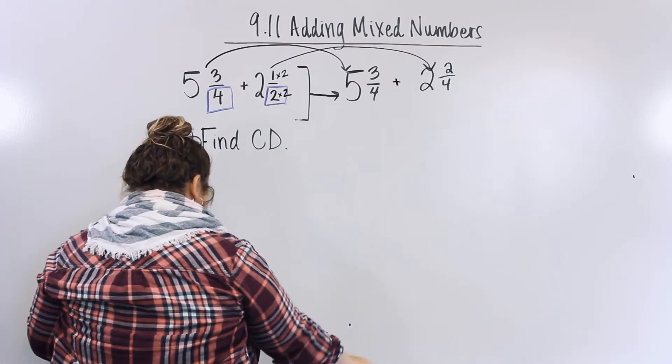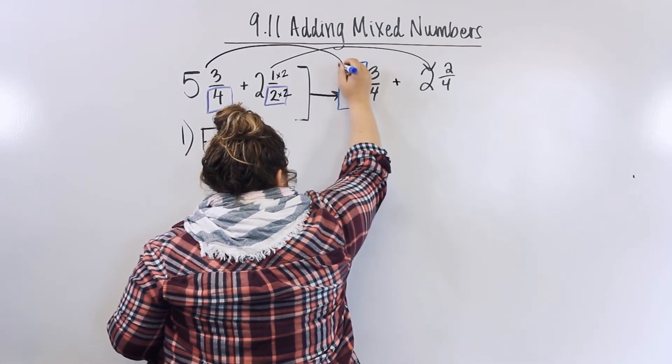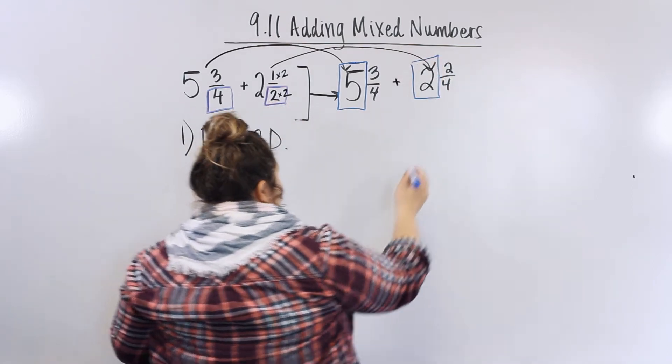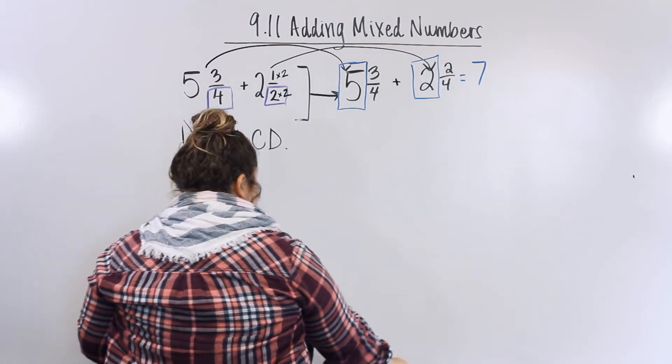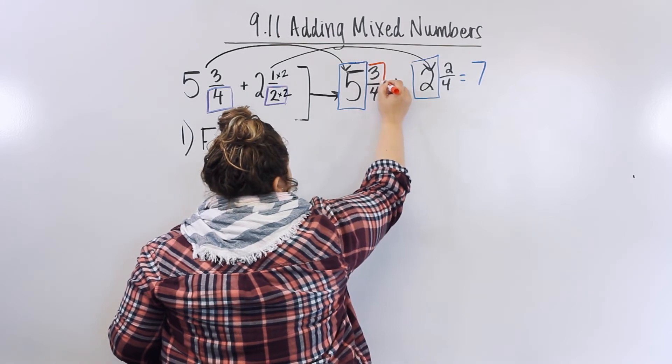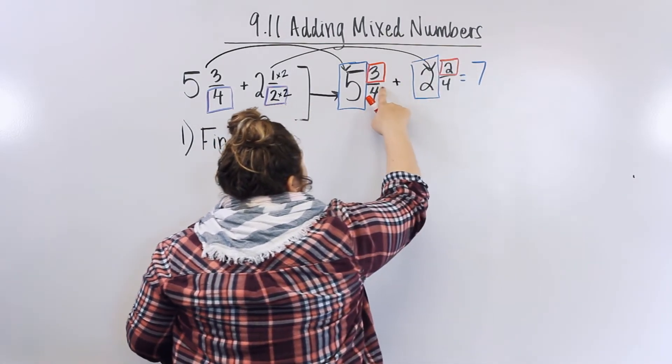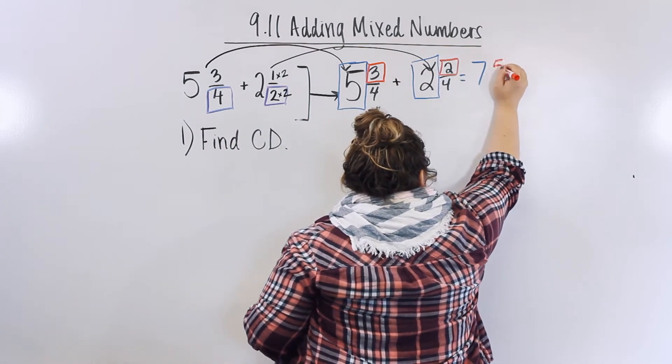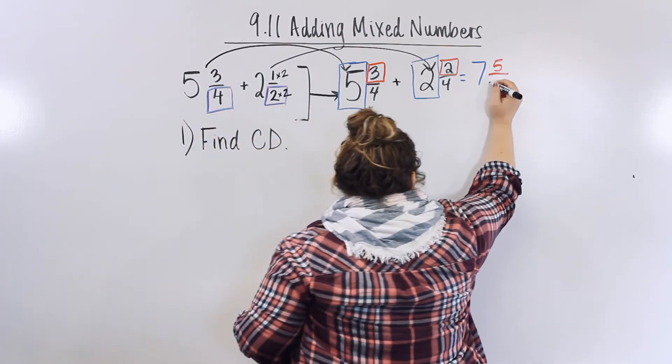We add our whole numbers first. 2, 5 and 2 is 7. Then, I add my numerators. 5 plus 2 is 5. And then, our numerators stay the same.